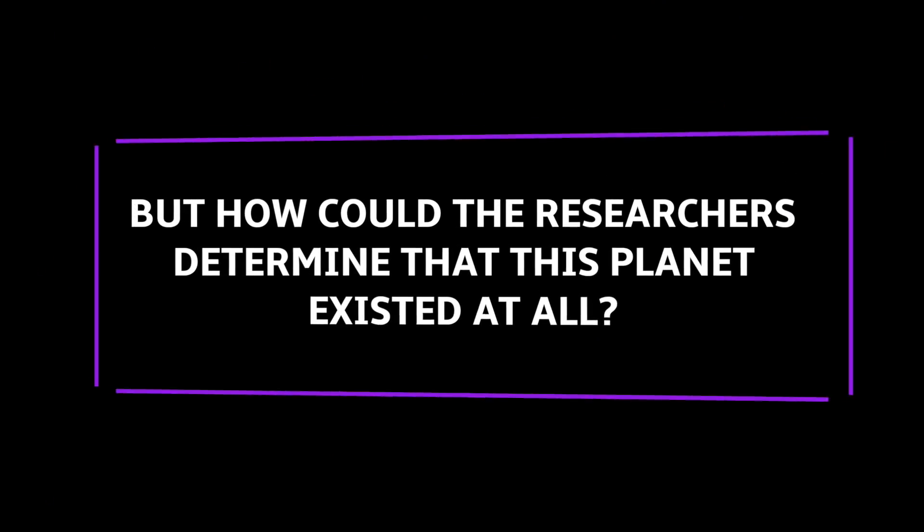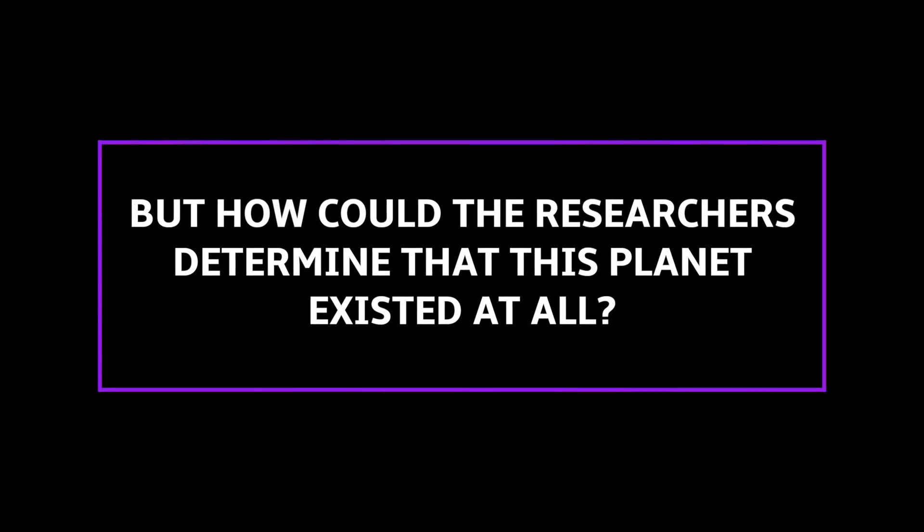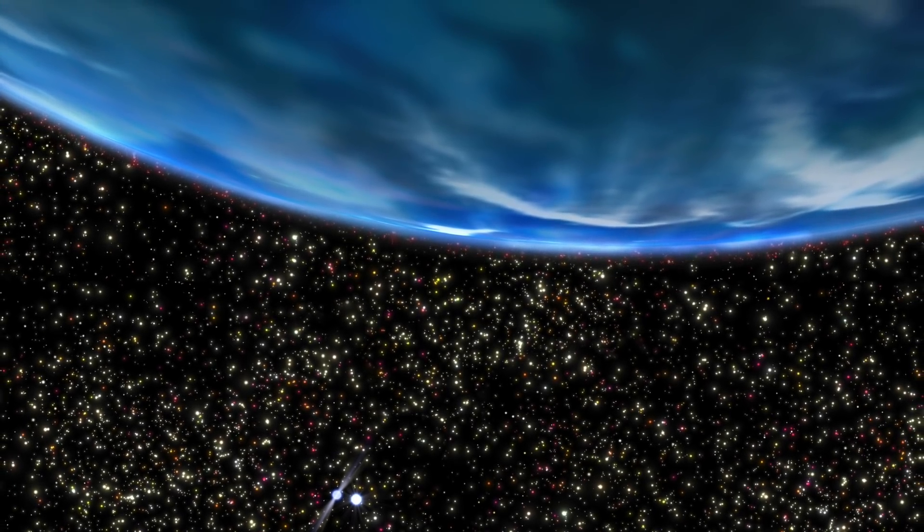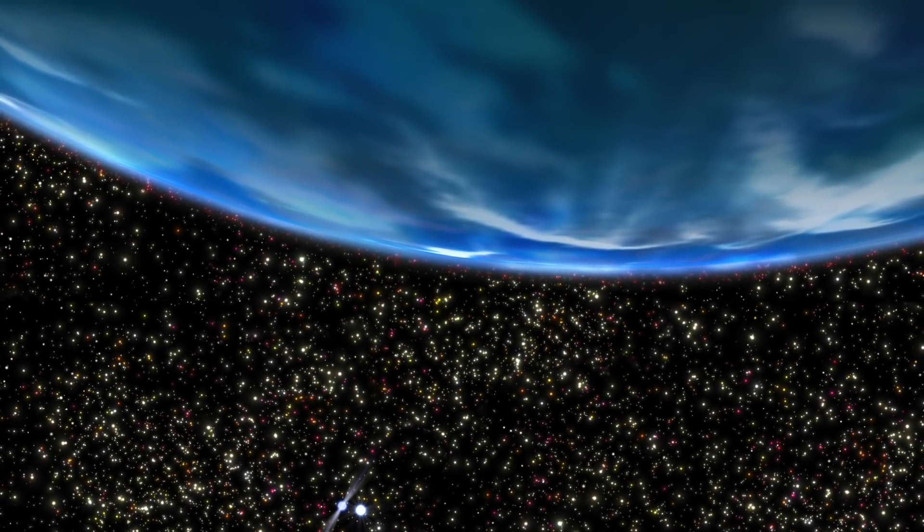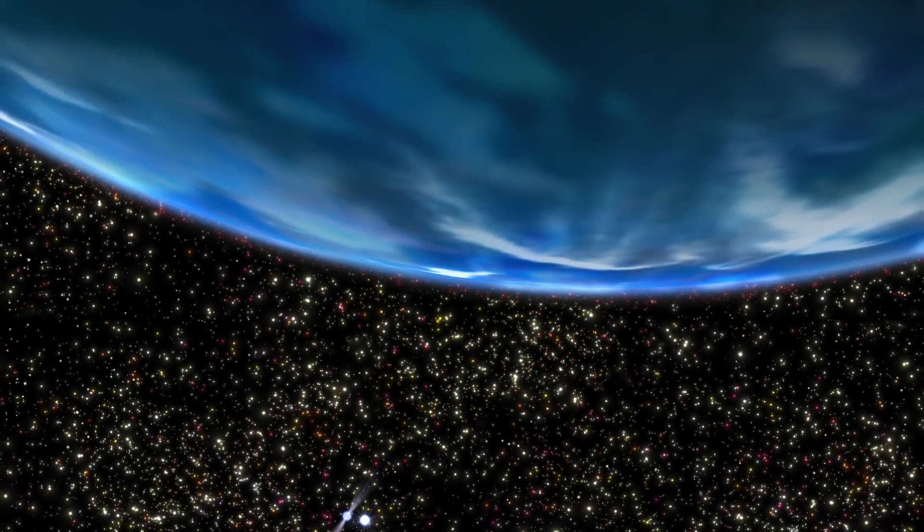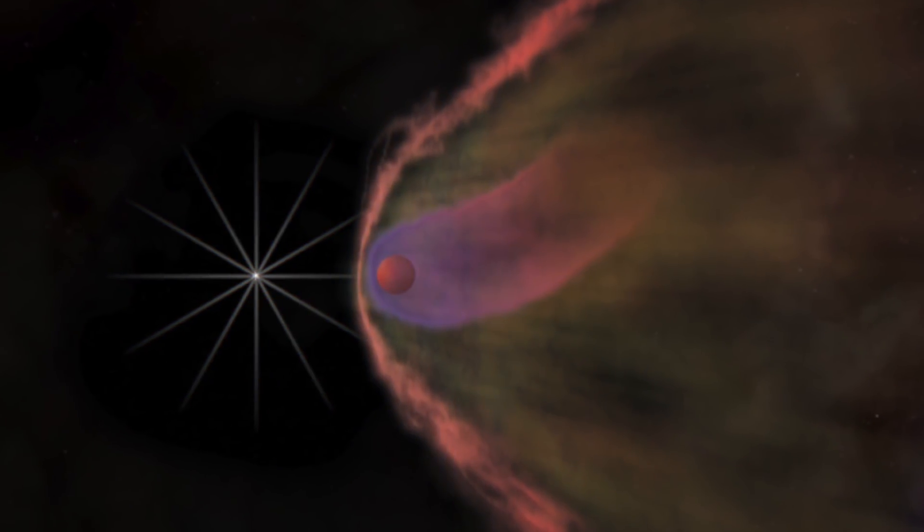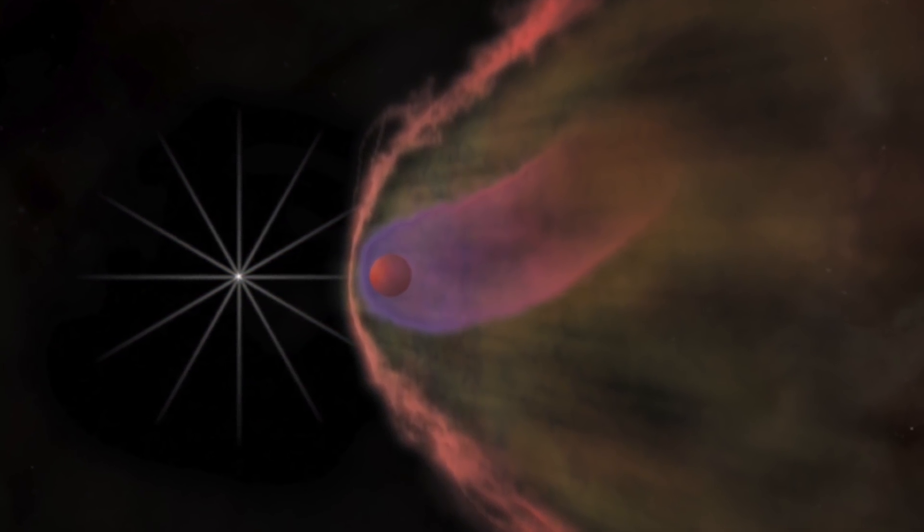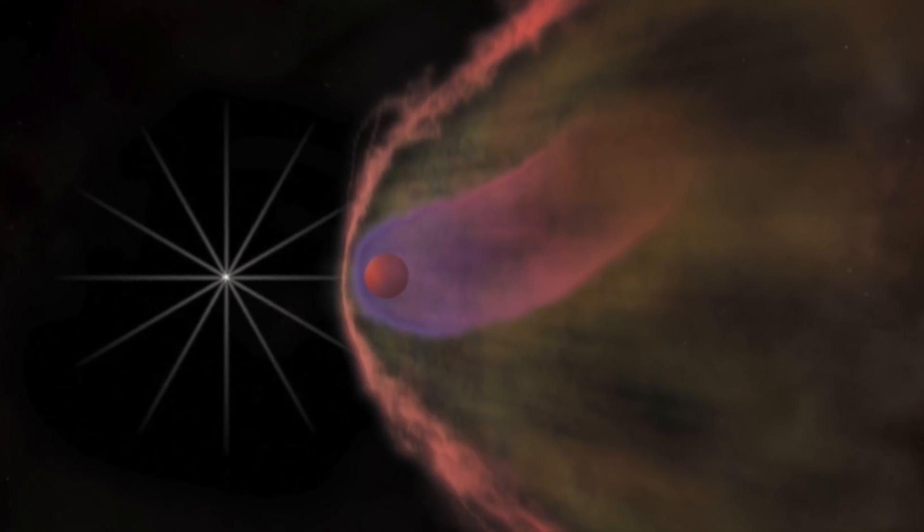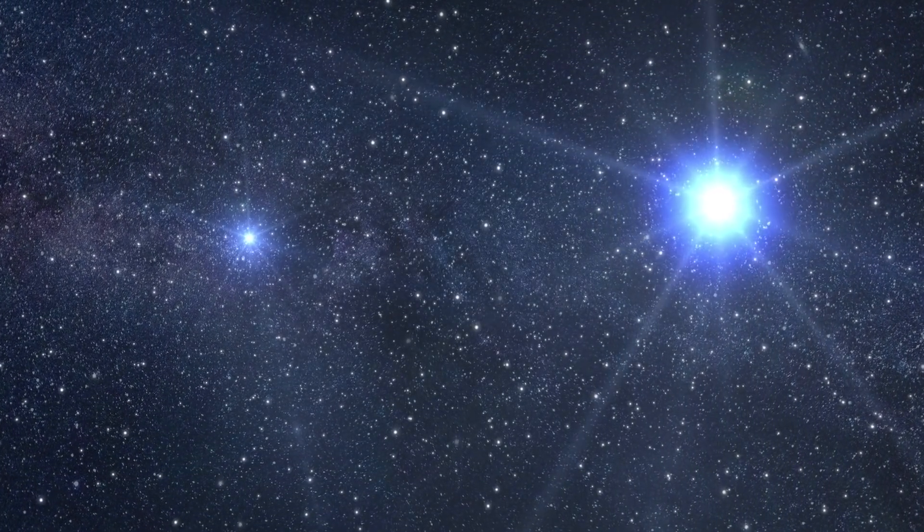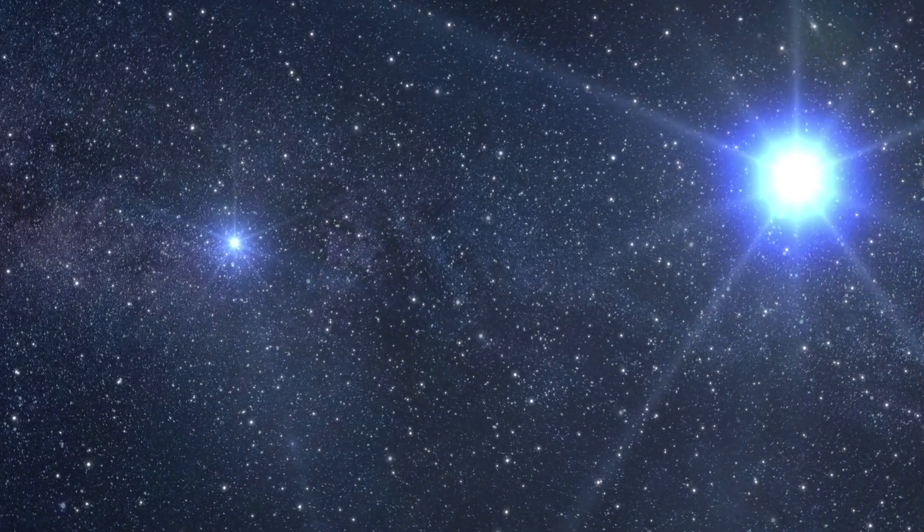But how could researchers determine that this planet existed at all? Using the Hubble data, scientists used the color and temperature of the white dwarf to determine its age and mass, which they compared with the wobbling of the neutron star. In addition, radio studies of the pulsar showed irregularities in its signal that could not be caused by its companion star alone. Using this data, the scientists calculated the inclination of the white dwarf's orbit.